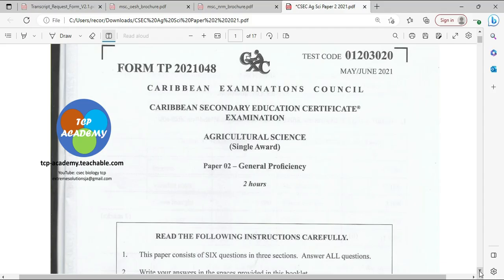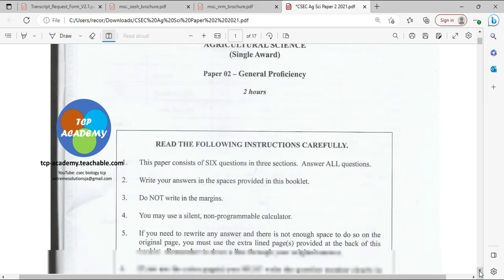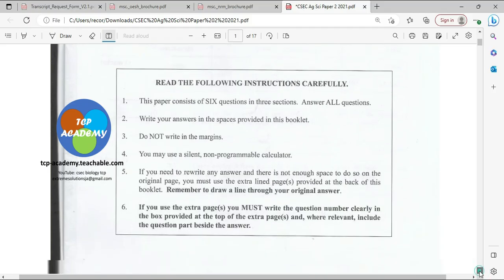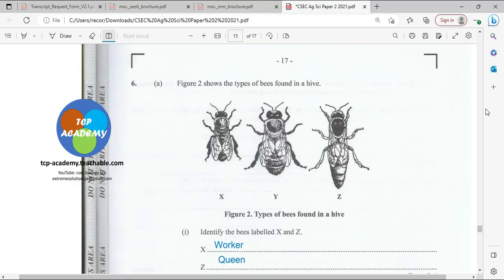Today we're going to be looking at question number six about beekeeping or apiculture. This is of course the Paper Two, and we're going to jump right into question number six for you. I'll be working the other questions as soon as I have the time and making them available before exam.